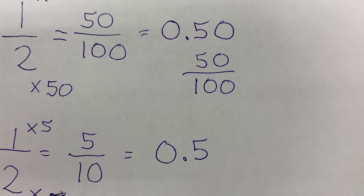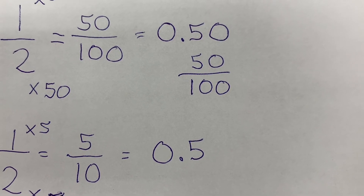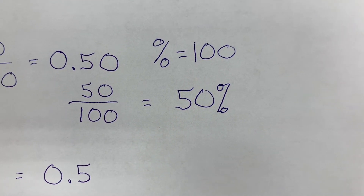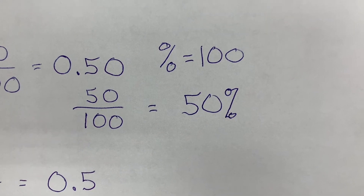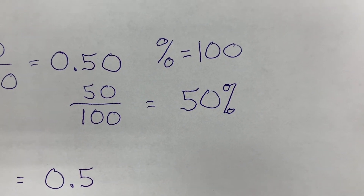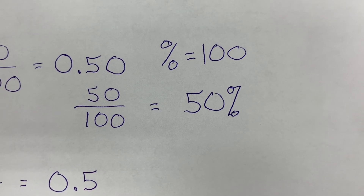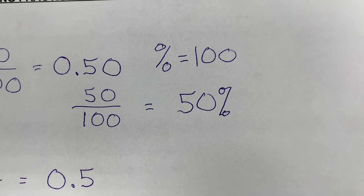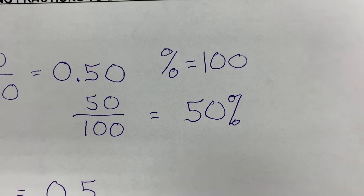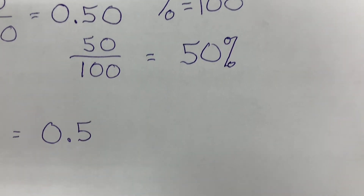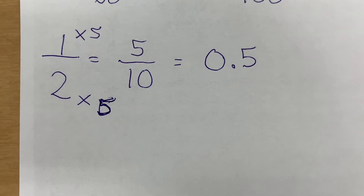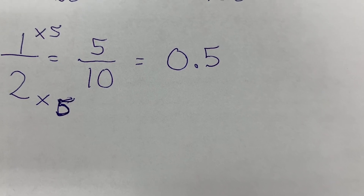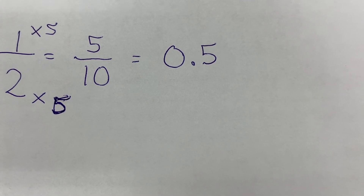So the next step is: now that we have a decimal, how do we convert that into a percent? The percent sign is equal to 100. So in order to change a decimal to a percent, it has to be in the hundreds place. So 50 over 100 is 50 percent, or 0.50 is 50 percent. We just need to add a zero behind the five to make it 50 hundredths.